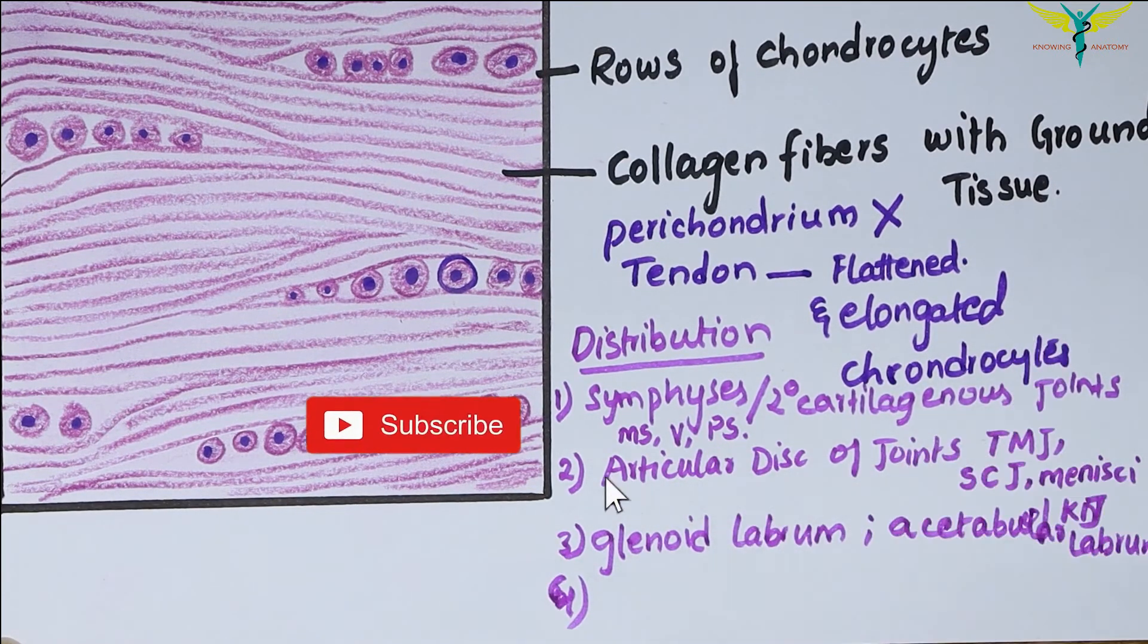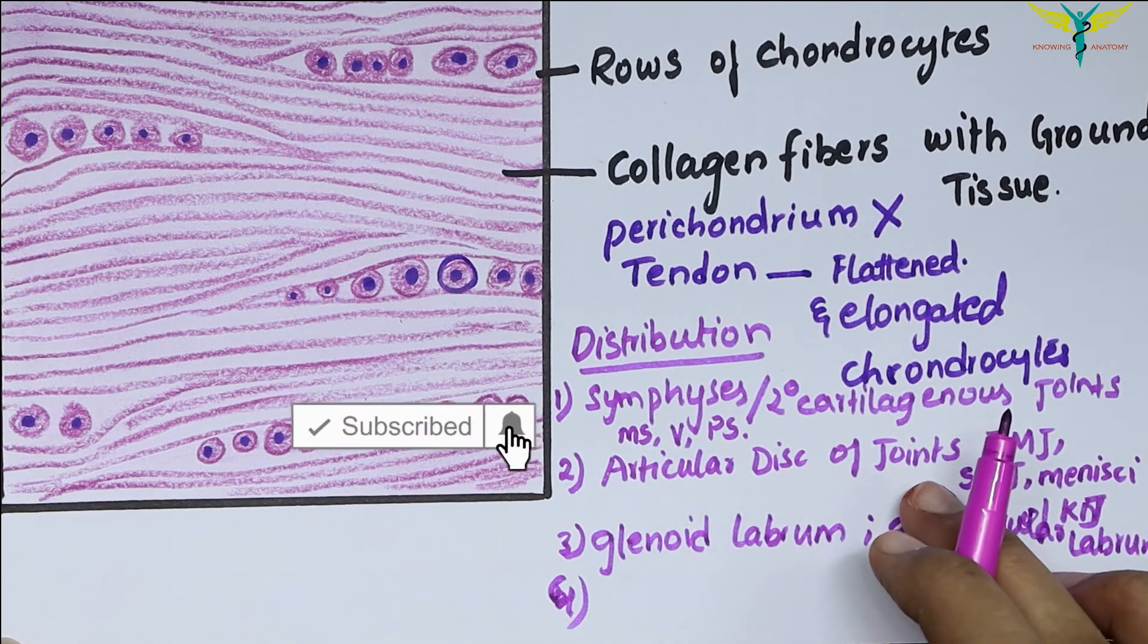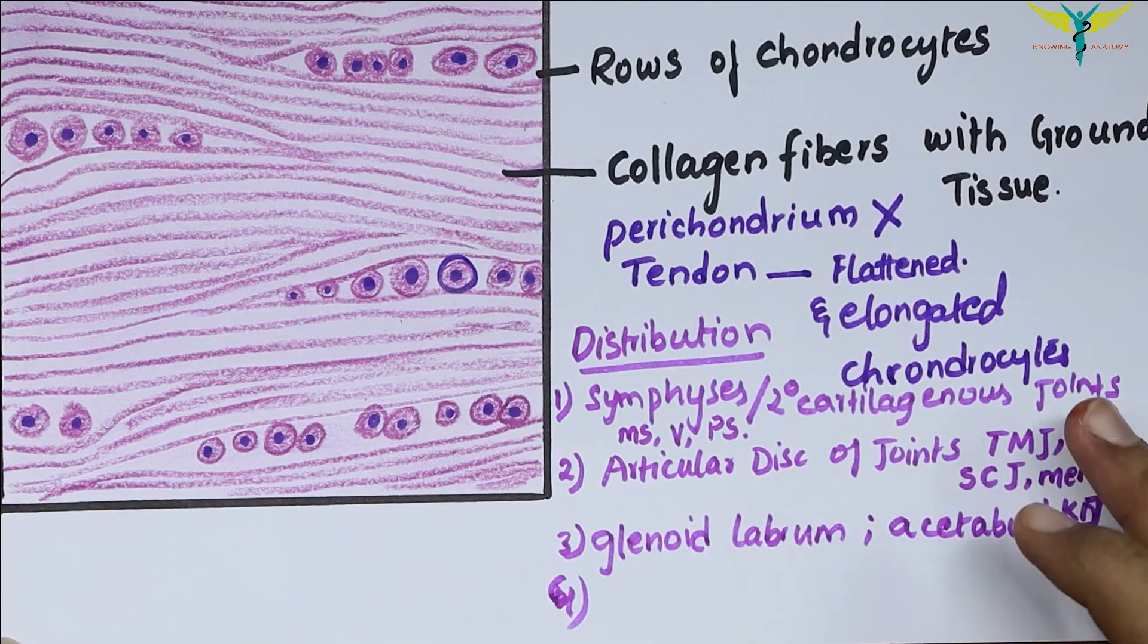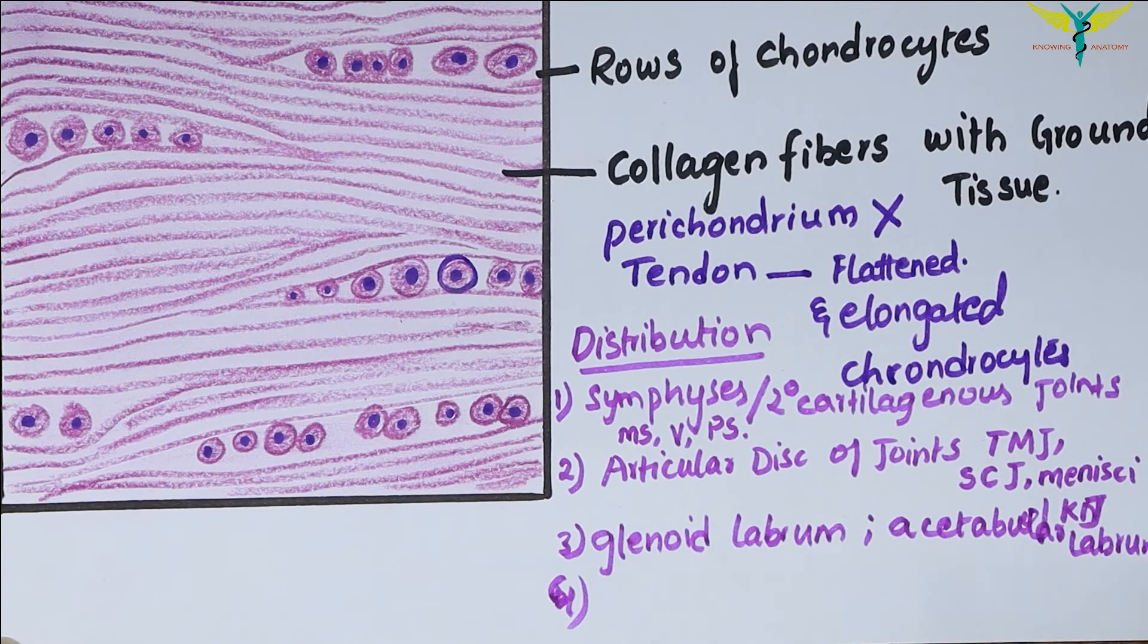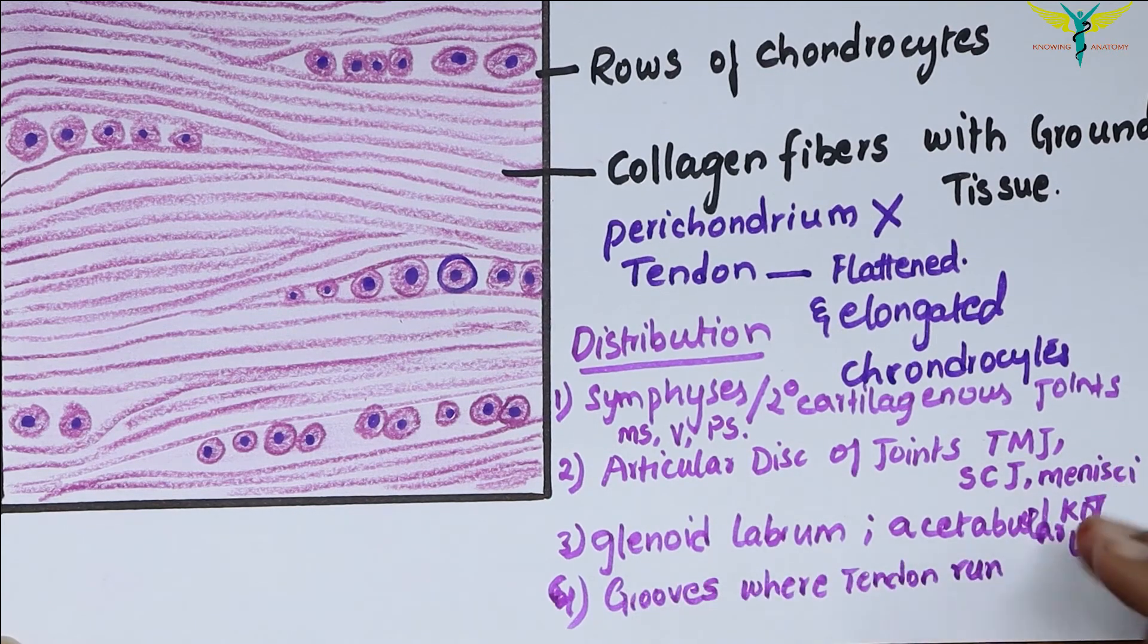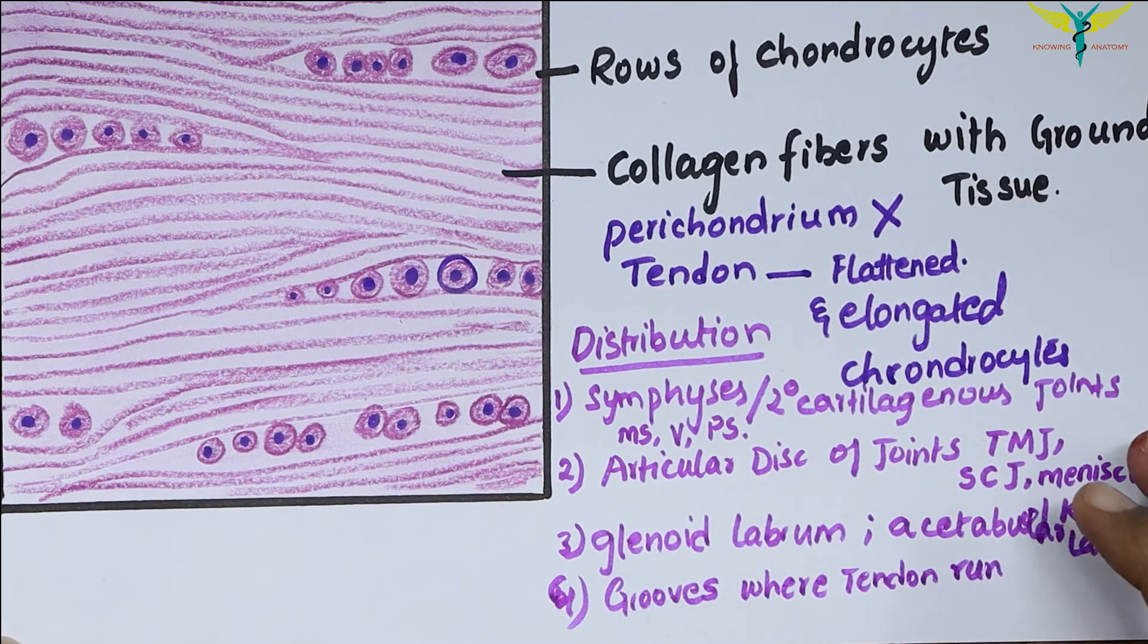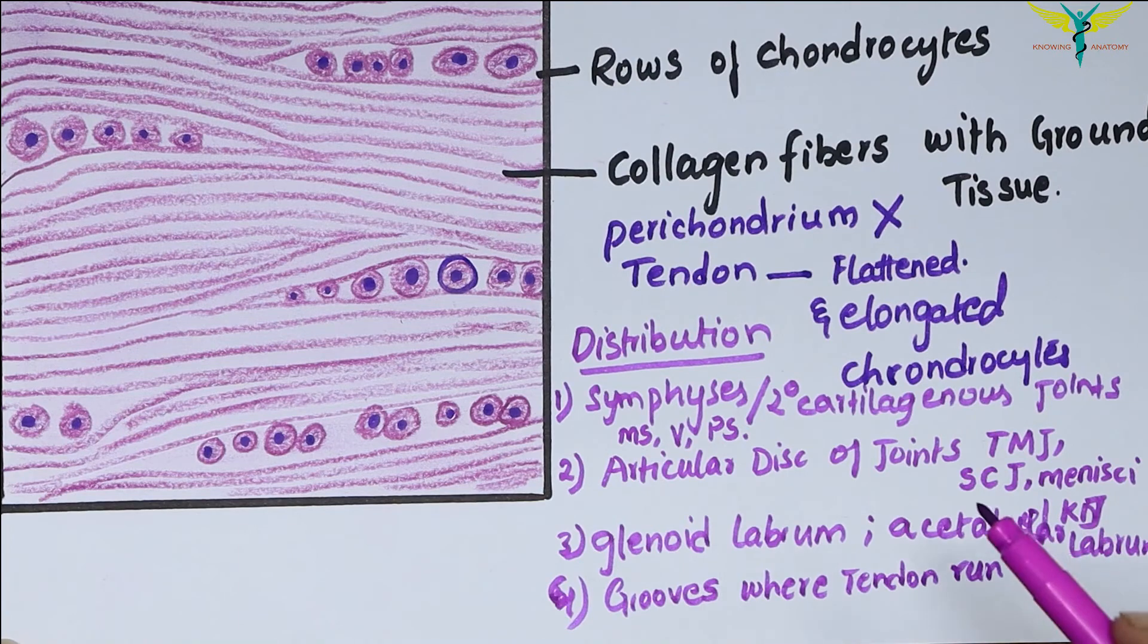Fibrocartilage is also present where tendons run in deep grooves on the bone and the grooves are lined by fibrocartilage. Remember, fibrocartilage is often present when tendons are inserted into bone.